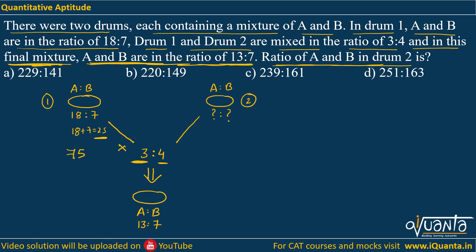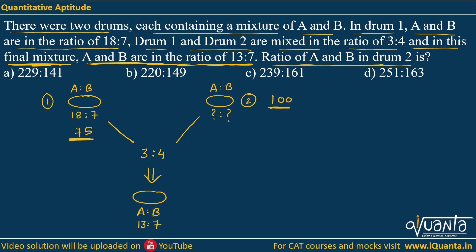So we assume the volume of drum 1 is 75. We are mixing it in ratio 3:4, so if the volume of drum 1 is 75, the volume of drum 2 will be 100. When we mix drum 1 and drum 2, we get the total volume equal to 175, because 75 plus 100 gives us 175.